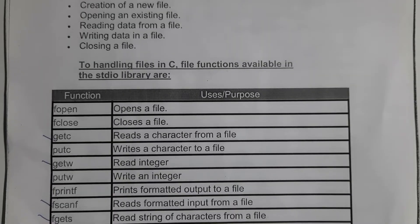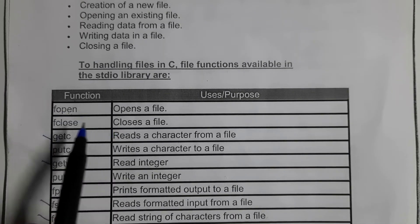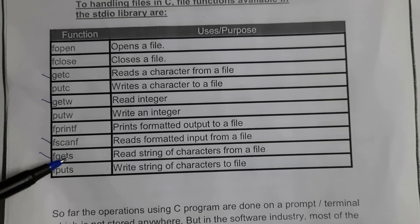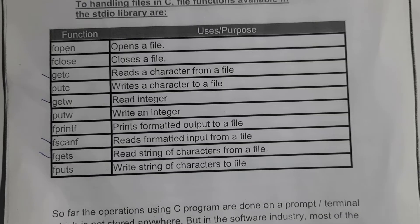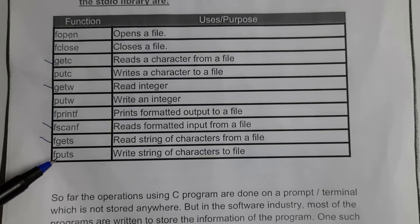To open a file you use the fopen function, and to close a file you use fclose. To read file information — meaning to display the text present inside a file on the output screen — you can use getc, getw, fscanf, or fgets. To write or add text to a file, you can use putc, putw, fprintf, or fputs.